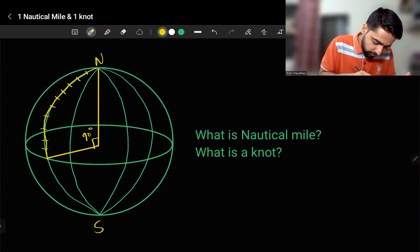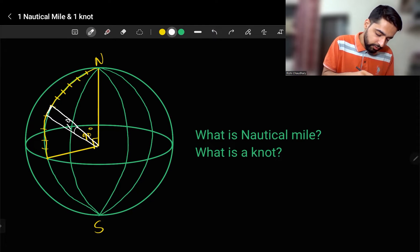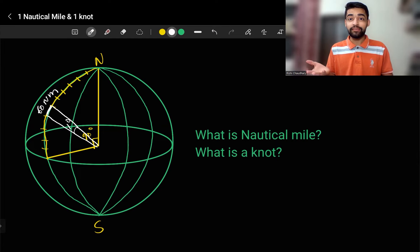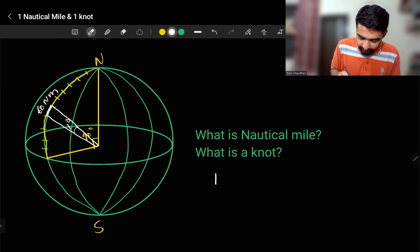Now each part, when subtended at the center, will give me one degree. This is my one degree and this arc will be nothing but 60 nautical miles. Isn't that amazing? So what I got is one degree is equal to 60 nautical miles.